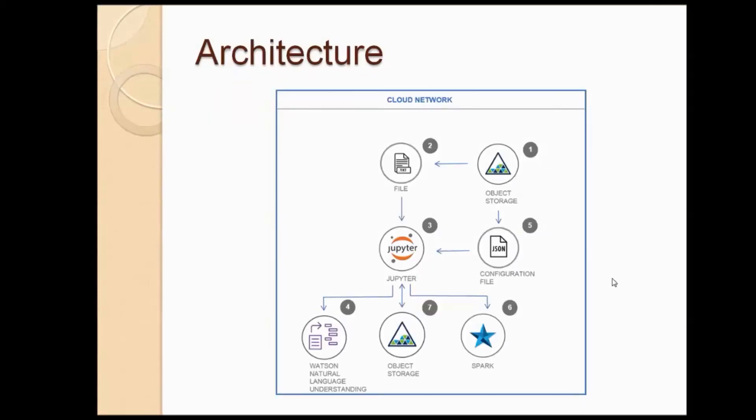This is the architecture for the developer journey. The input configuration JSON and the input documents are stored on IBM object storage. The correlation algorithm is on a Jupyter notebook that is hosted on IBM data science experience.